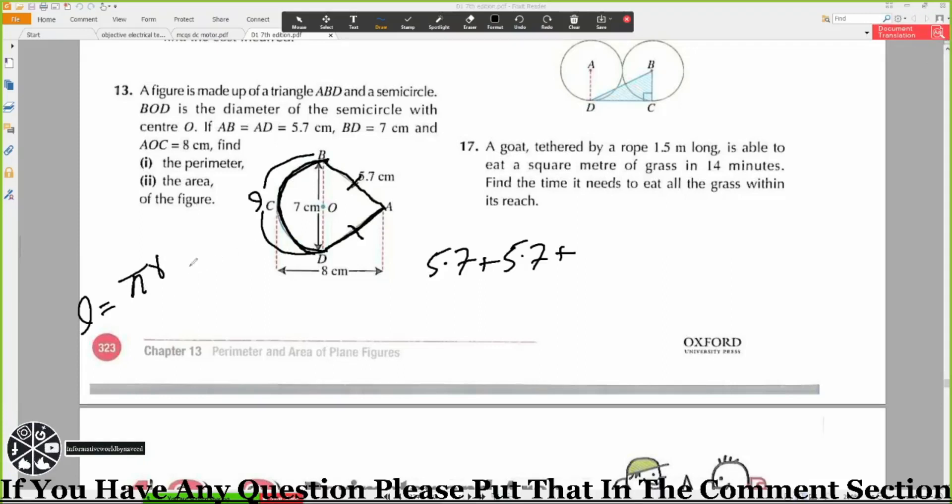So this is 22 divided by 7 times 3.5. 7 divided by 2 is 3.5. That is equal to 11. So this length will be equal to 11 meters or cm.